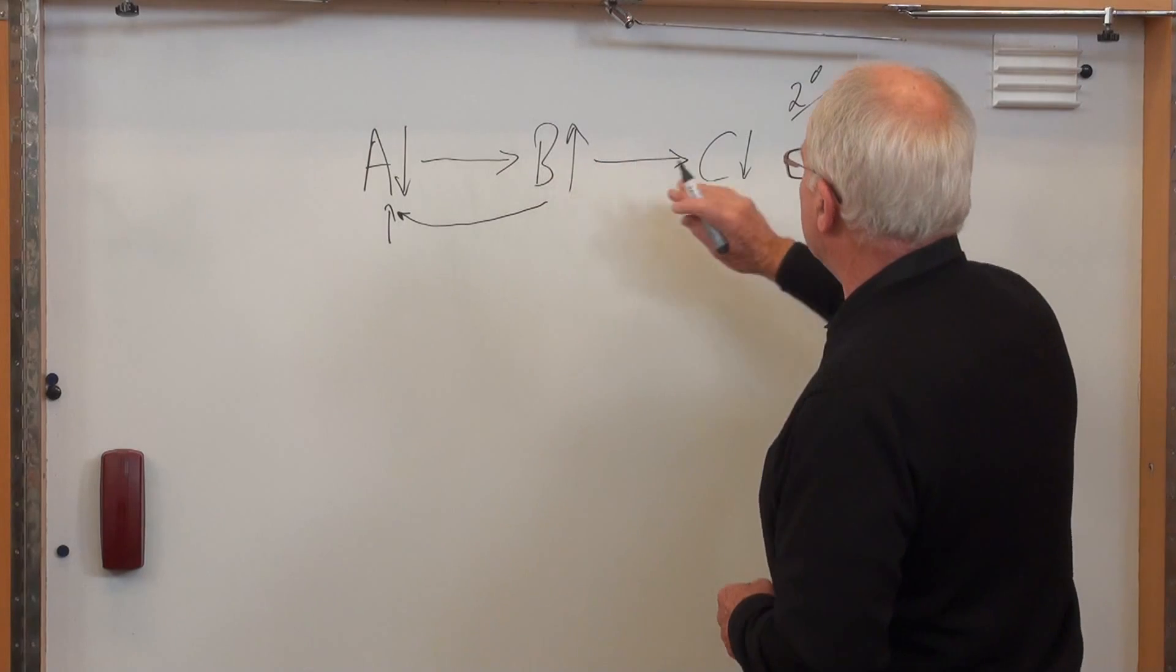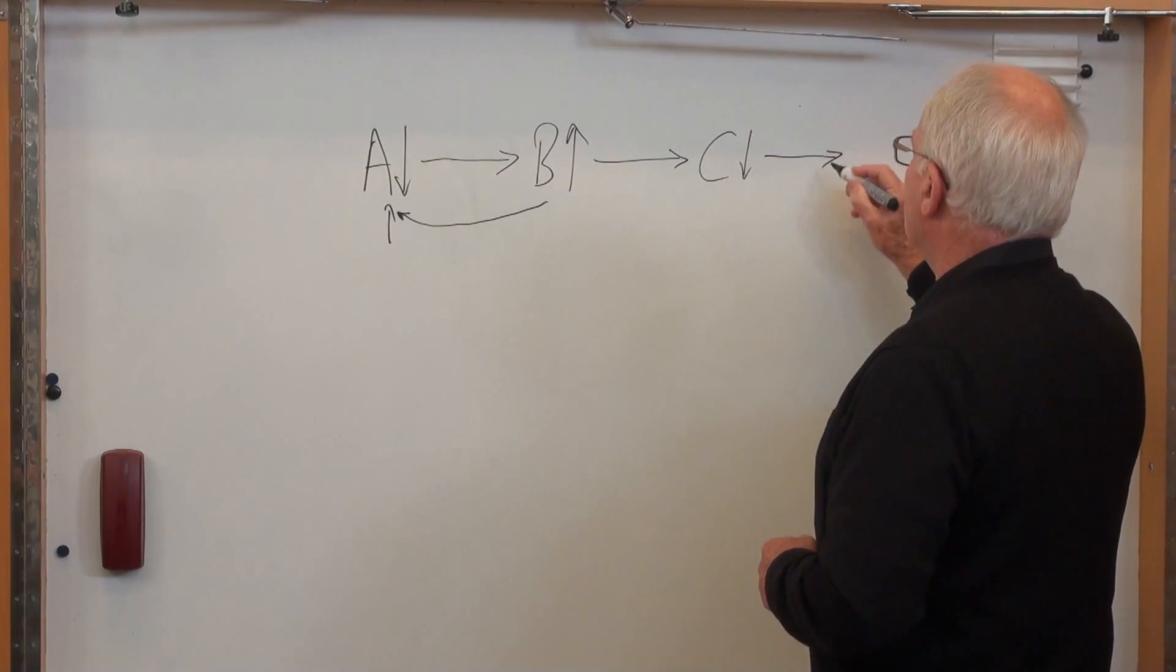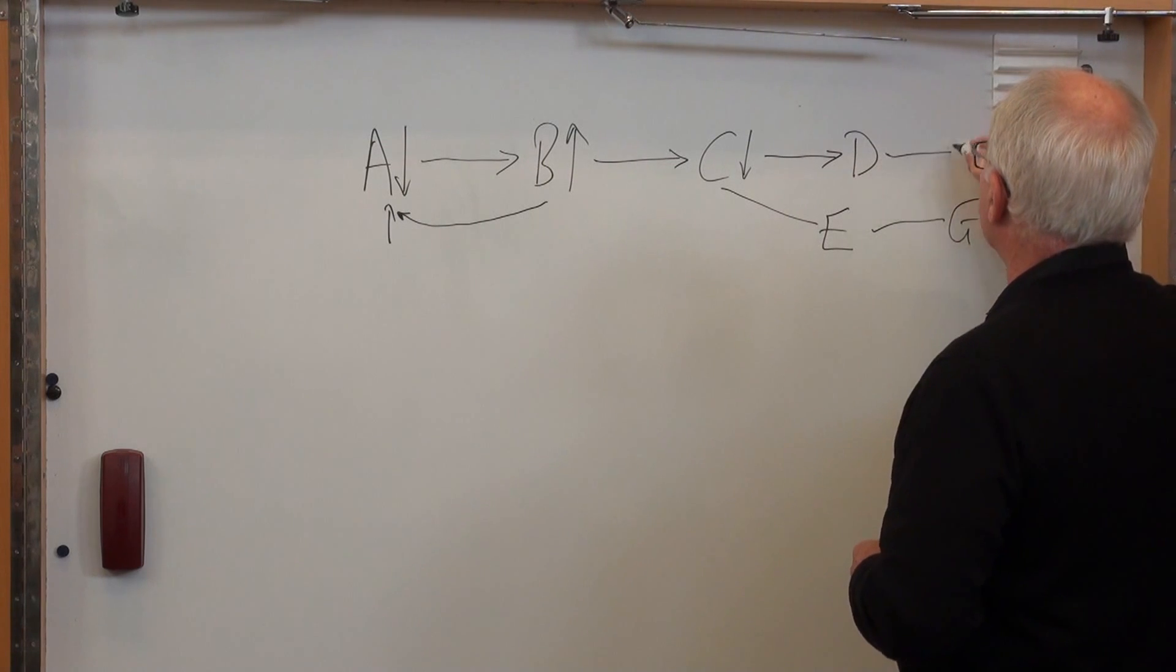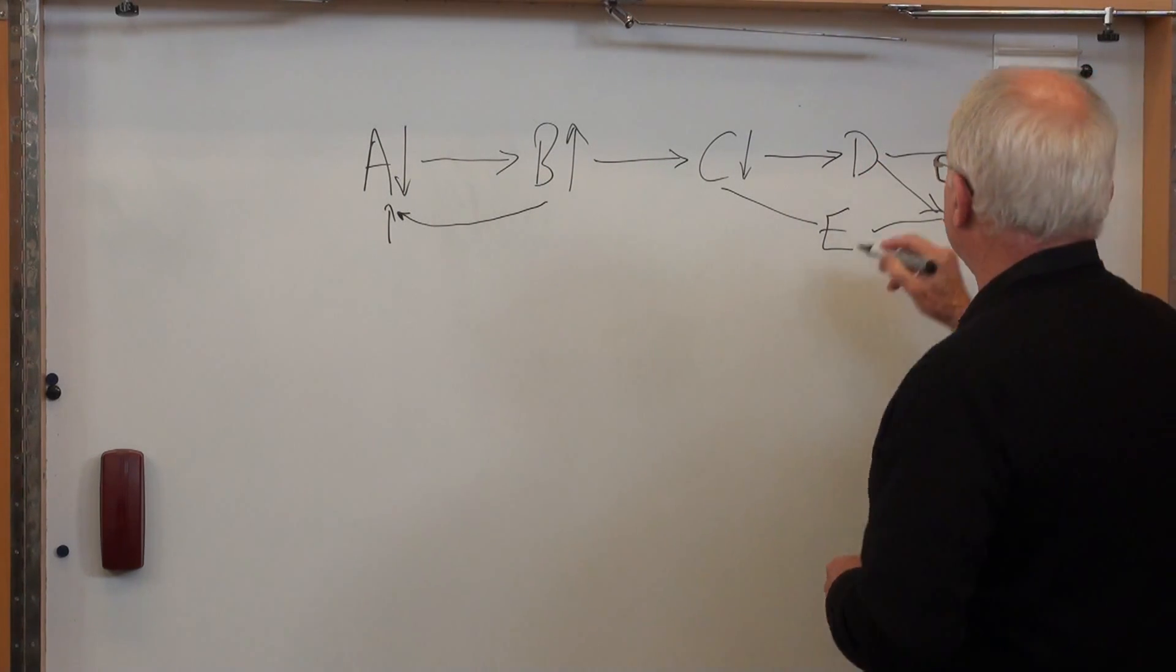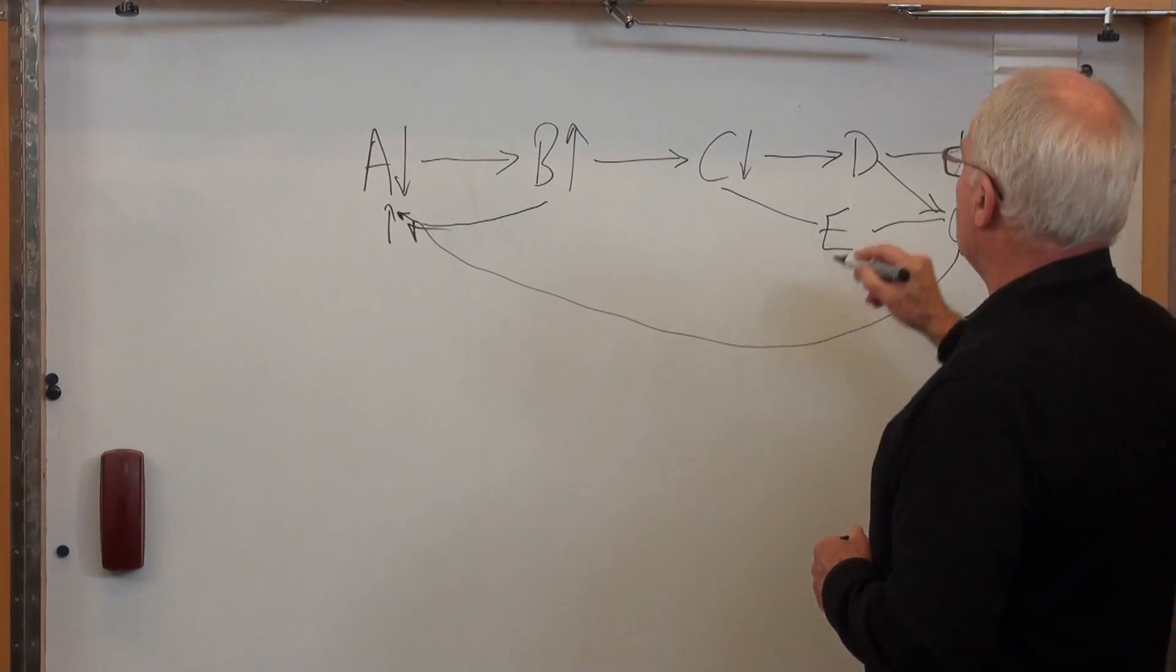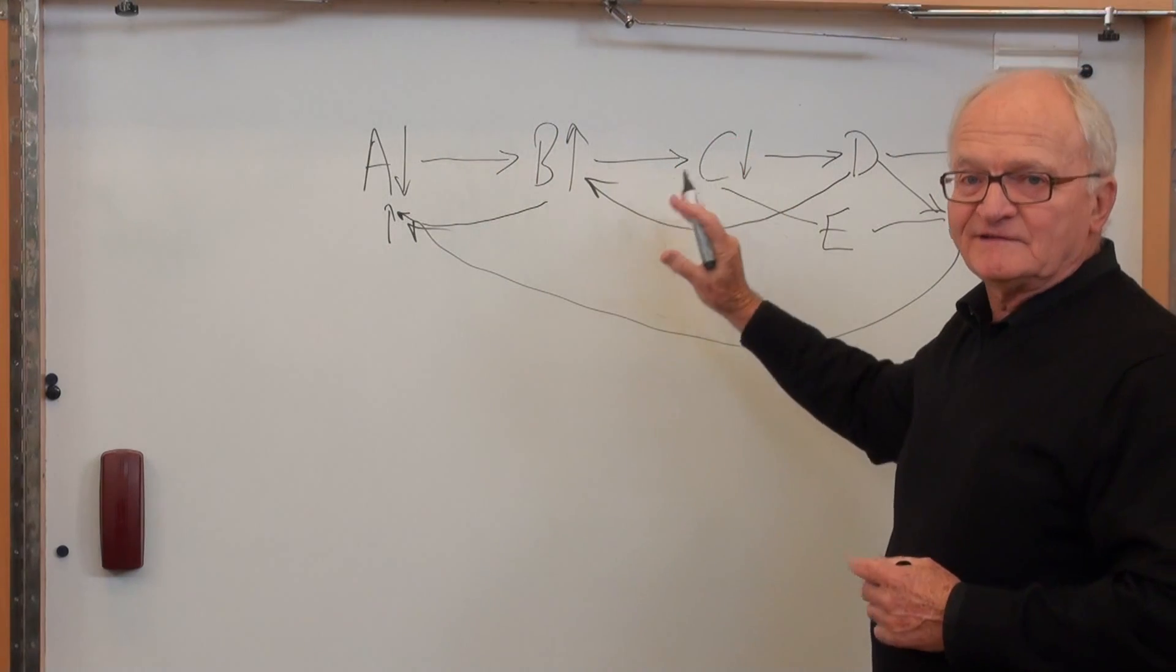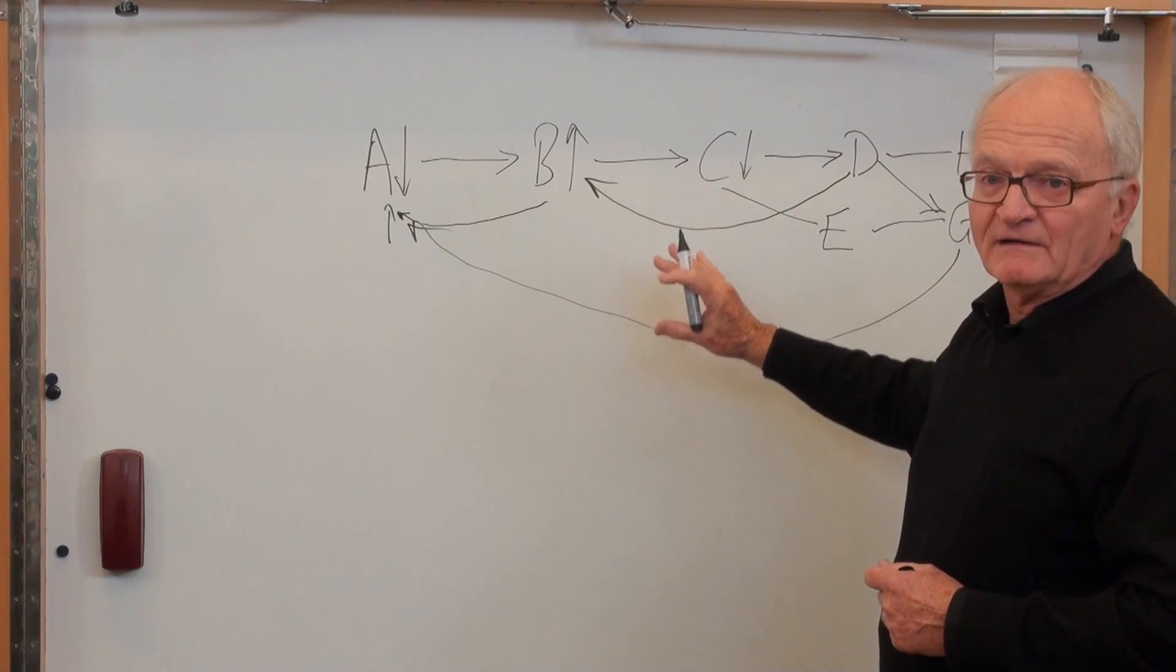But if A affects B, and it affects C, and then C affects D, but it also affects E, and E affects G, and D affects H, and G, and these go up and down in different ways, and if G feeds back to affect A, and D feeds back to affect B, that's a feedback loop. It's a system of feedbacks. And that's what resilience management is all about.